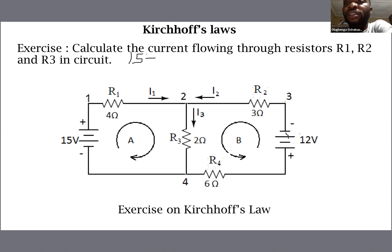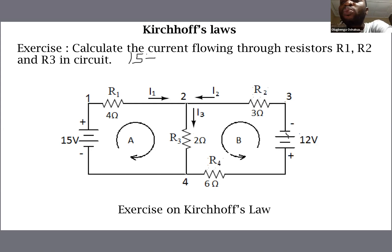The voltage drop across R1 is given by V = IR from Ohm's Law. The current here is I1 and the resistor value is R1, so the voltage drop is I1·R1. Since R1 is 4 ohms, we write minus 4I1.